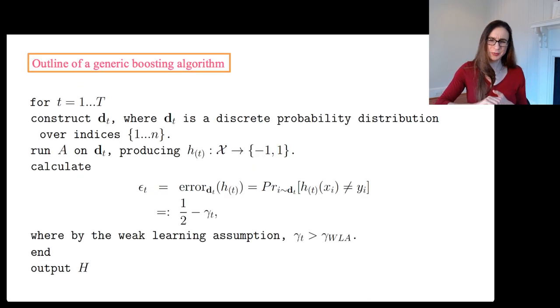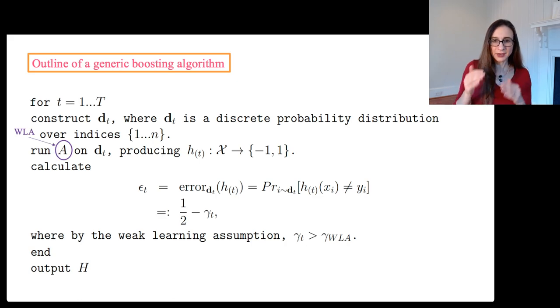I'm going to provide here the outline of a generic boosting algorithm. For each iteration of the algorithm, you construct a weight vector, which is a discrete probability distribution over the n training points. And then you run your weak learning algorithm on this weighted data set producing a weak classifier. So we have a weak learning algorithm producing a weak classifier. Try to get that terminology straight there.